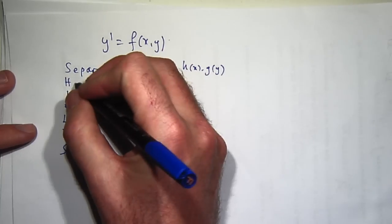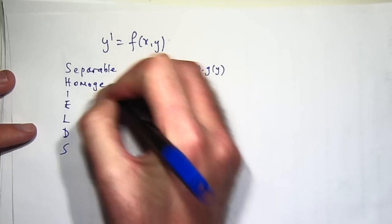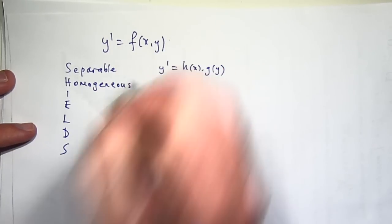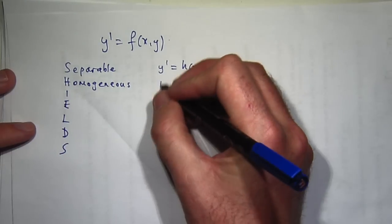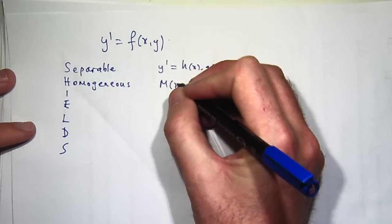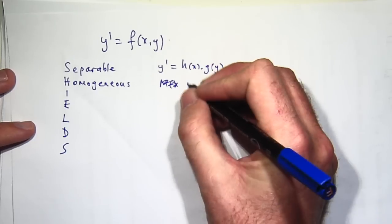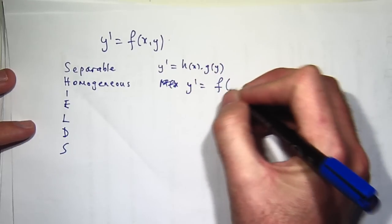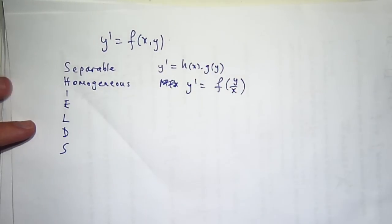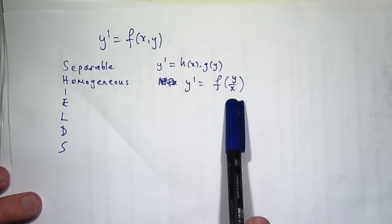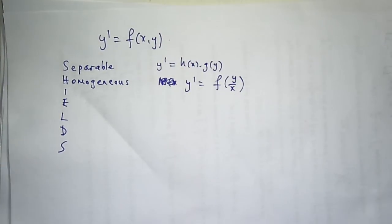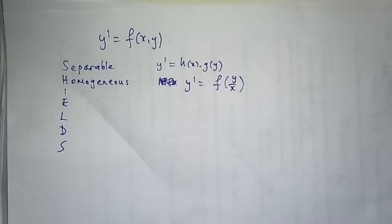H. Homogeneous. What's a homogeneous equation? Well, it's something like this. You have a special structure. In here, you make the substitution U equals Y over X, and then you form a separable differential equation.